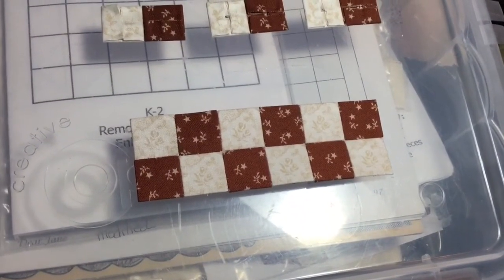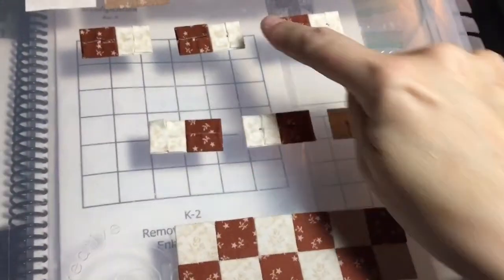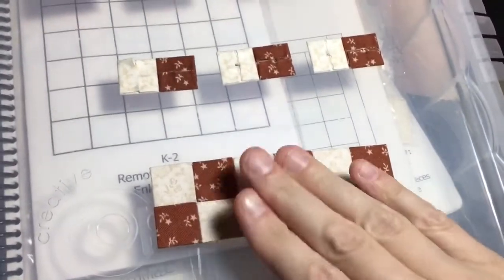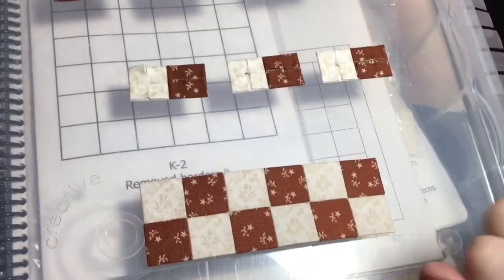So I've got my bottom two rows together, and I've paired up my next two rows. So I'm basically going to make three units just like this and then connect them.